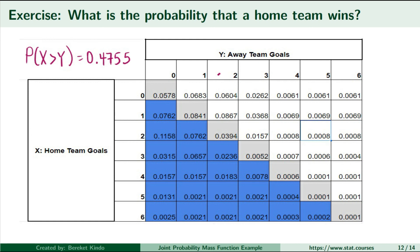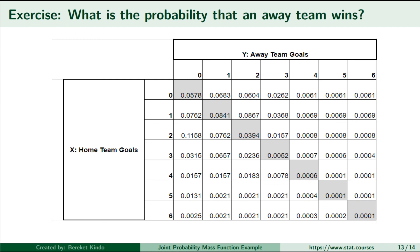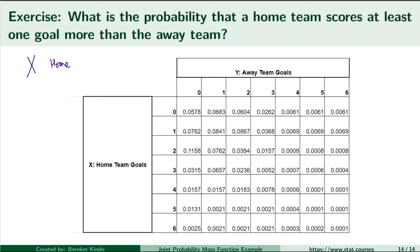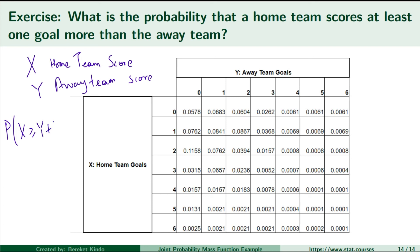Another exercise: what is the probability that the away team wins? The away team wins if Y takes values greater than X. Those are the off-diagonal entries in the upper right corner of this table. When you add all those probabilities, you get a value equal to 0.3372. Finally, I'm not going to give you the answer to this one, but I would like you to put it in the comments: what is the probability that the home team scores at least one goal more than the away team — that is, X is at least one more than Y? Thanks for watching, come back for more videos like this, and feel free to subscribe and share it with your friends.